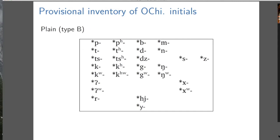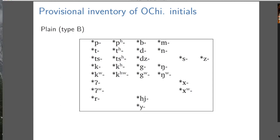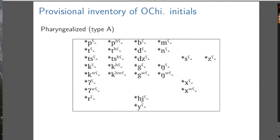If we just take the initials of Middle Chinese and do these moves — get rid of the palatal affricates, get rid of the retroflex consonants, and add in labiovelars and labial glottals — this is what you get as an inventory. This is a good place to pause and take stock: this is what you get from internal reconstruction before looking at Xie Xiong series. We also get rid of the voiced velar fricative.